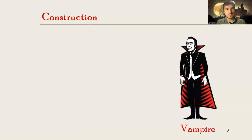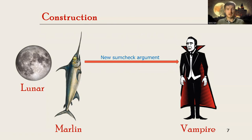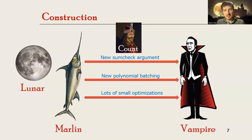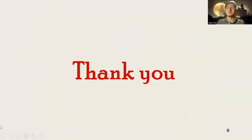So how do we achieve this? We take two already known zkSNARKs — Lunar and Marlin — and take ideas from them. We then add a new sublinear argument that we call 'Count', a new polynomial patching technique, and many small optimizations. With each optimization there is a trade-off between proof size and prover computational and SRS cost. Thank you for listening, and I hope to see you in our full talk.